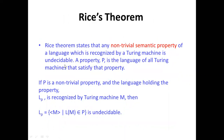Now, what is Rice's theorem? Rice's theorem states that any non-trivial semantic property of the language recognized by a Turing machine is undecidable. The property P is the set of all Turing machines that satisfy that property. If P is a non-trivial property and a language holds that property, then the set of encodings M such that the language accepted by M belongs to P is undecidable.